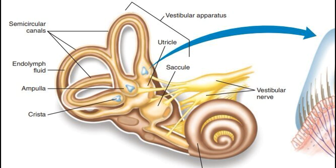The vestibular system works in close coordination with our visual and proprioceptive systems — the sense of our body's position in space. Together, these systems ensure that we can move smoothly and react quickly to changes in our environment. It provides the brain with information about head movements and spatial orientation, allowing us to maintain balance and coordinate our movements. This information is crucial for activities such as driving, playing sports, and even simple tasks like bending down to pick something up.